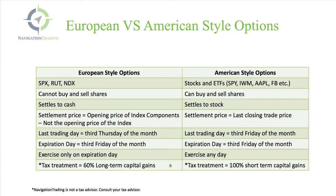In regards to taxes, we are not a tax advisor — make sure you consult your tax advisor. But in general, the tax treatment for European style options is a little bit more favorable because 60% of the gains can be counted as long-term capital gains at the 15% rate, whereas the tax treatment on American style options is 100% short-term capital gains, so that's whatever your ordinary income tax rate is.